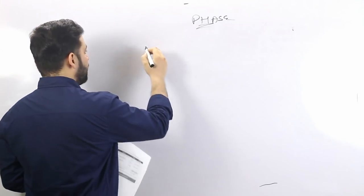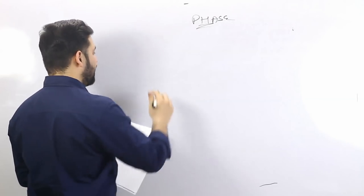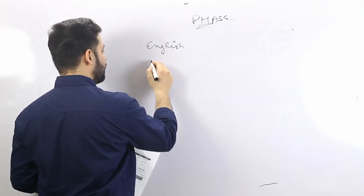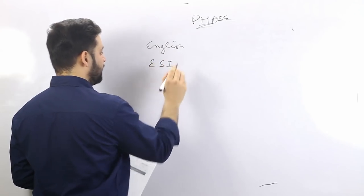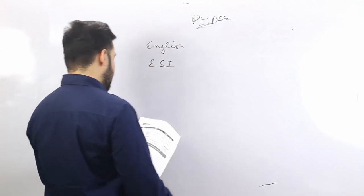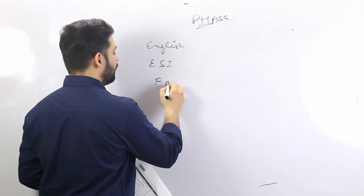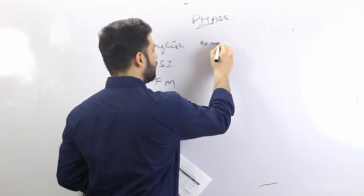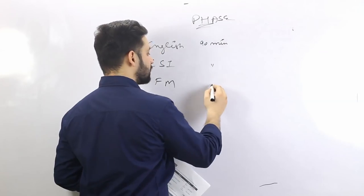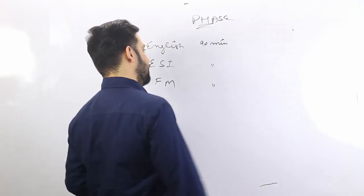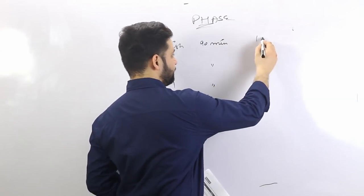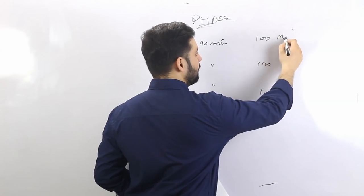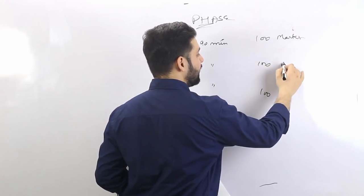Paper one is English, paper two is Economic and Social Issues — ESI — and the third is Finance and Management. These three papers have 90 minutes each and 100 marks allotted to each. This is the second phase.